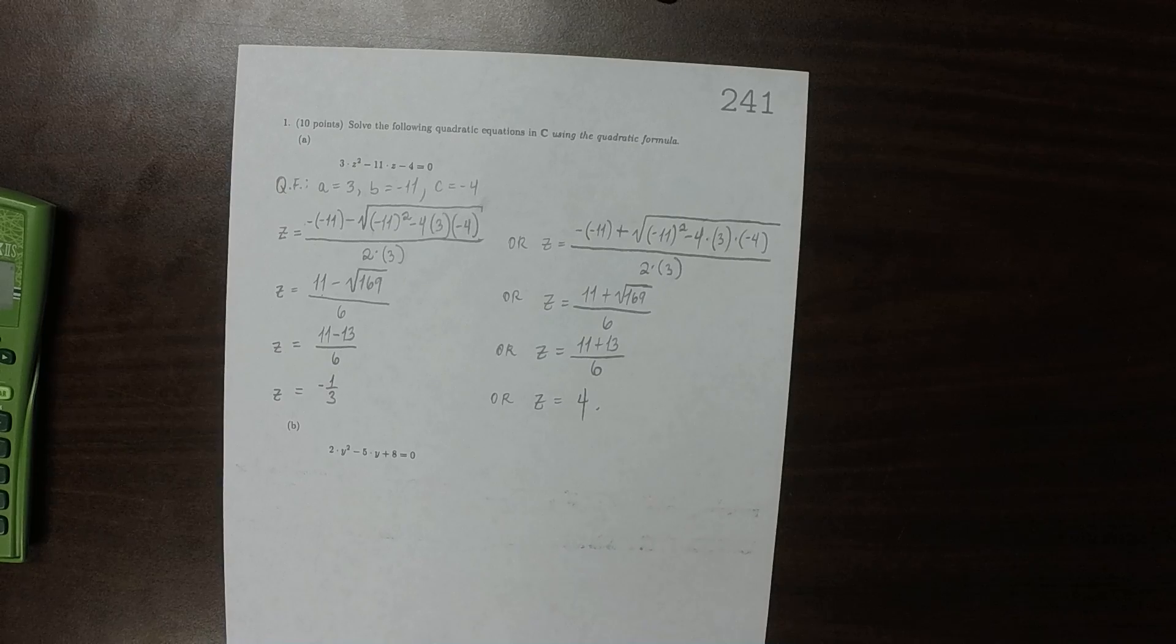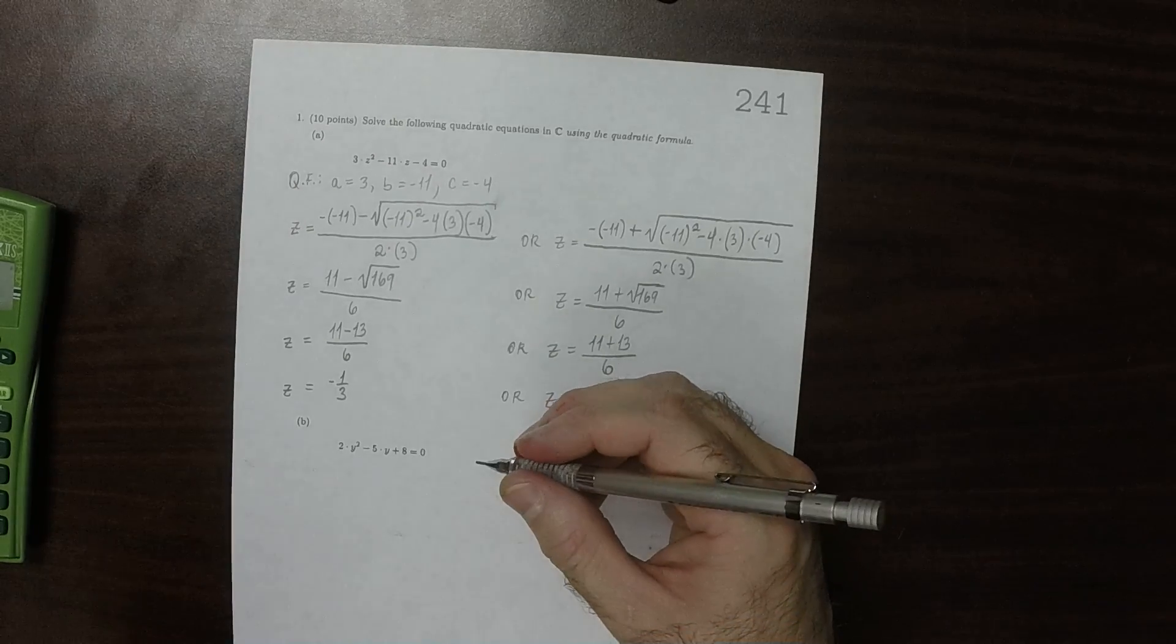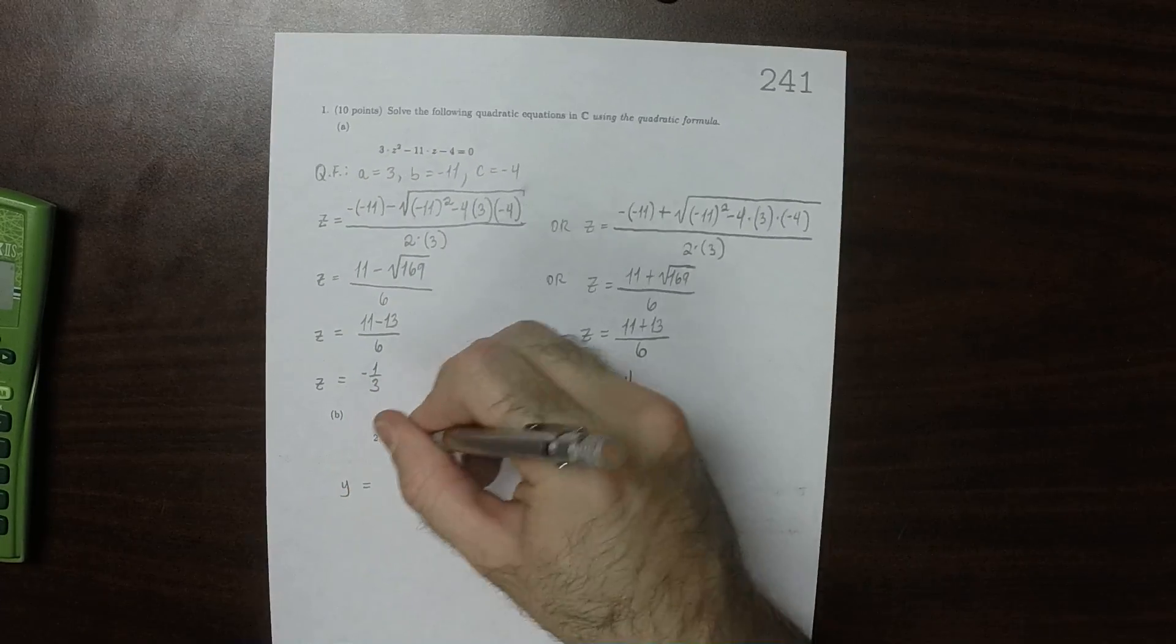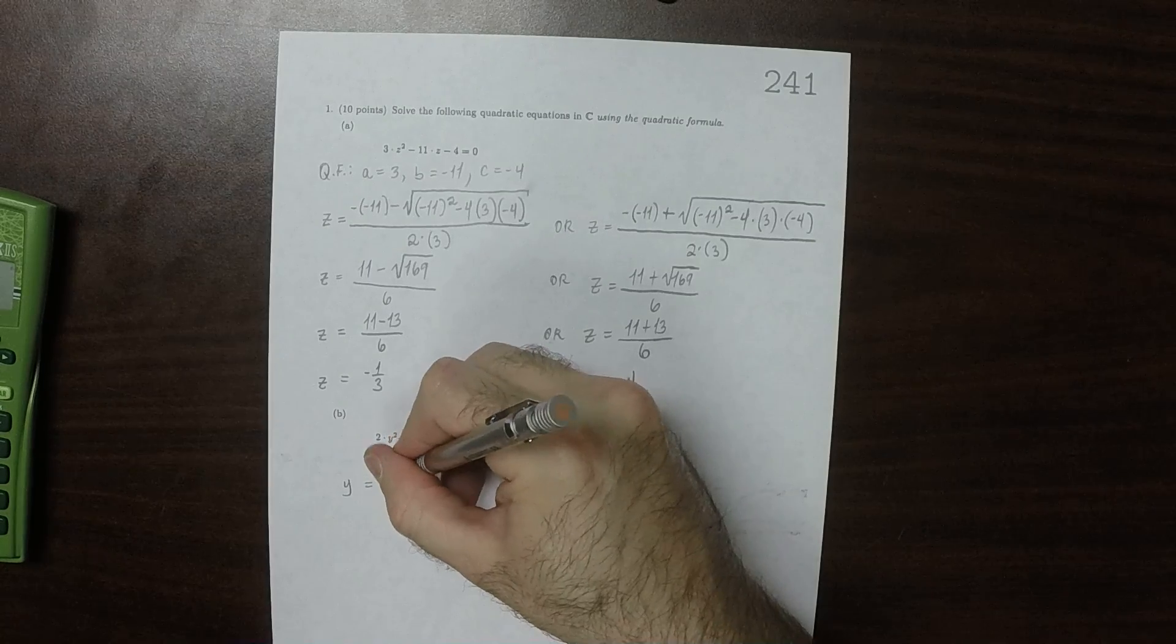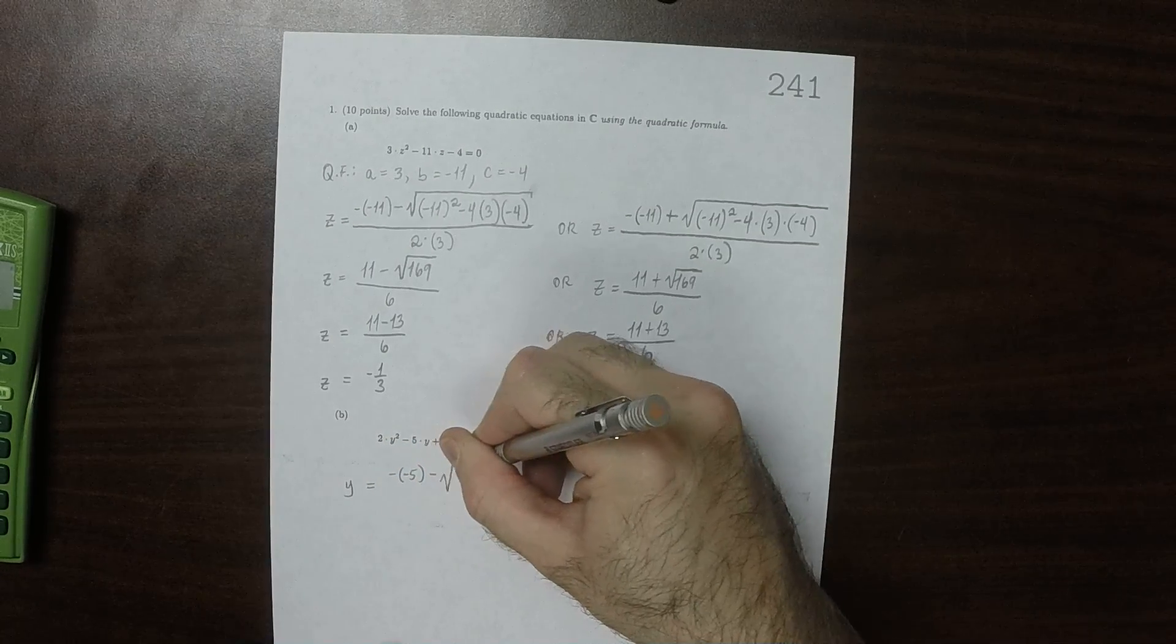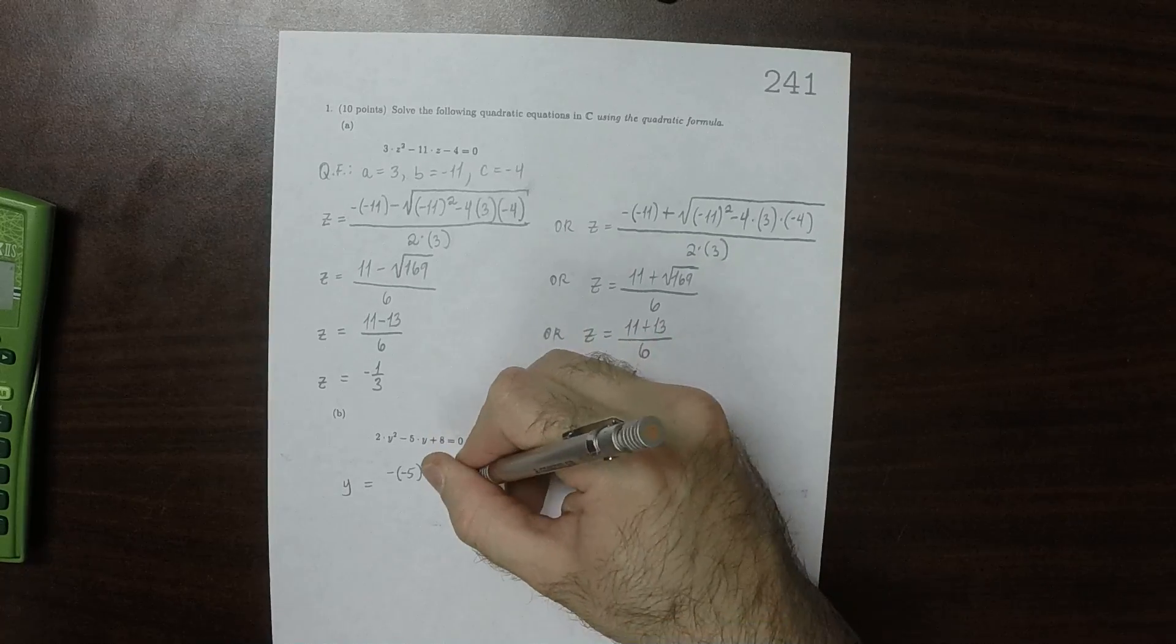The next one is just more of the same, except that instead of the variable being z, it's y. So then again, it would be negative b, so negative negative 5 subtract square root of discriminant.